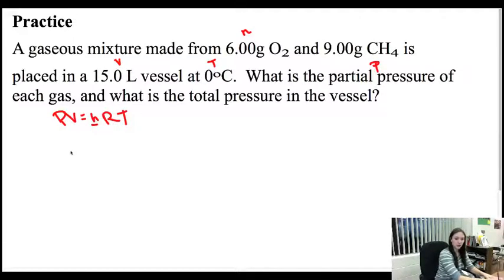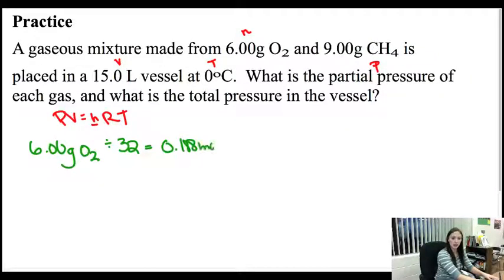The first thing I have to do is take my N and get it in the right unit for each thing. So I'm going to have 6 grams of O2, I need to get that in moles. To go grams to moles we divide by our molar mass. Molar mass of O2 is 32, and I'm going to get 0.188 moles. Do the same thing for the CH4. I've got 9 grams of CH4 divided by my molar mass which is 16, and I'm going to get 0.563 moles.